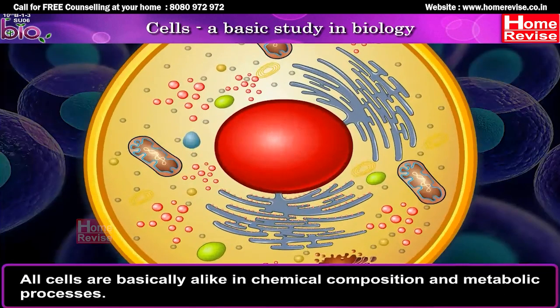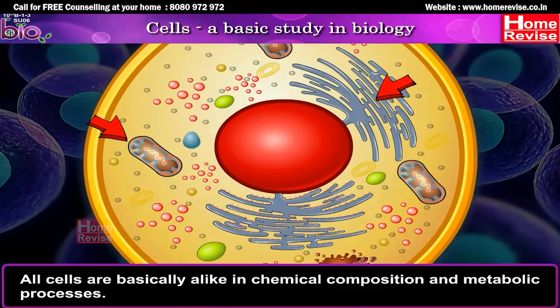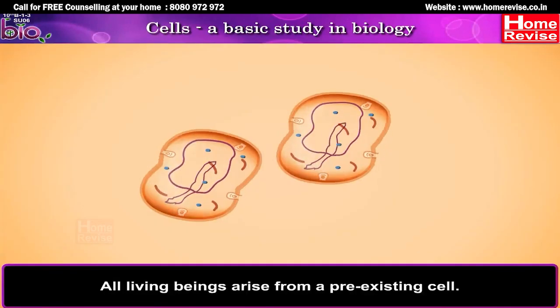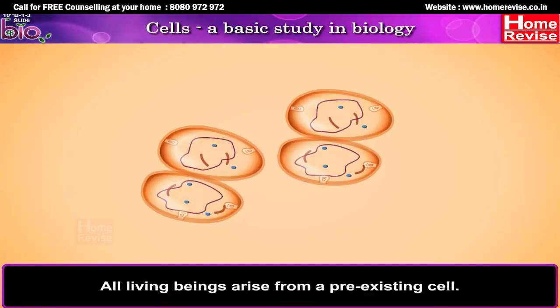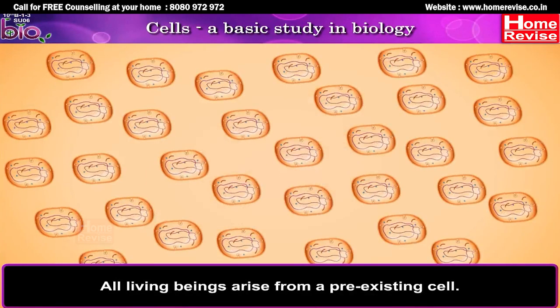The cell is the structural and functional unit of the body. All cells are basically alike in chemical composition and metabolic processes. All living beings arise from a pre-existing cell.